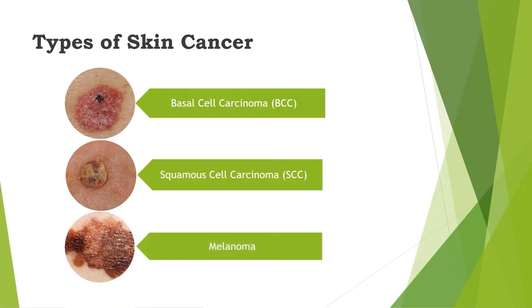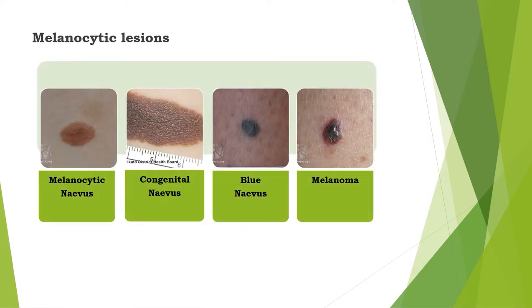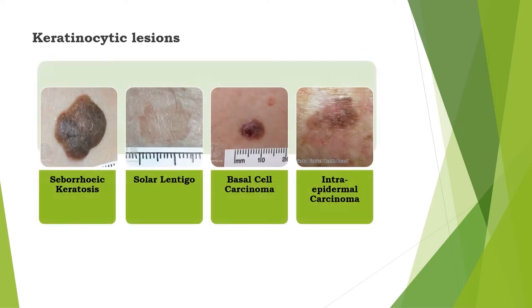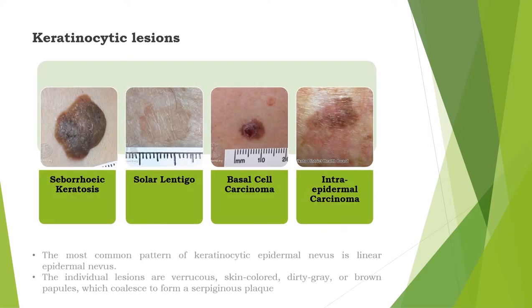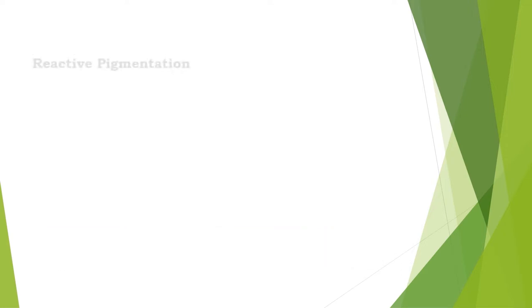Pigmented skin lesions can be of various types. The most common types are melanocytic lesions, keratinocytic lesions, vascular lesions, and reactive pigmentation.